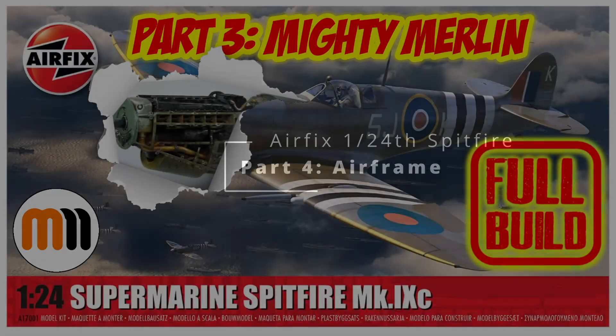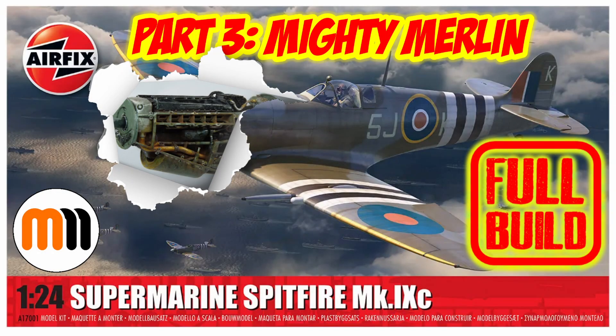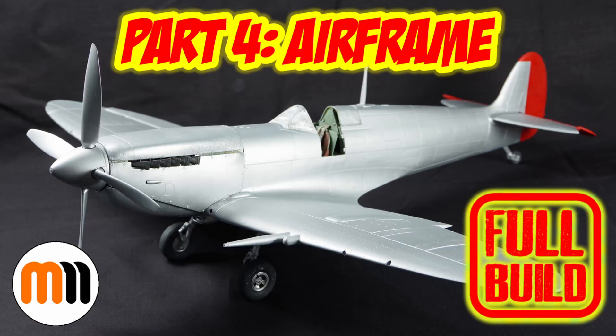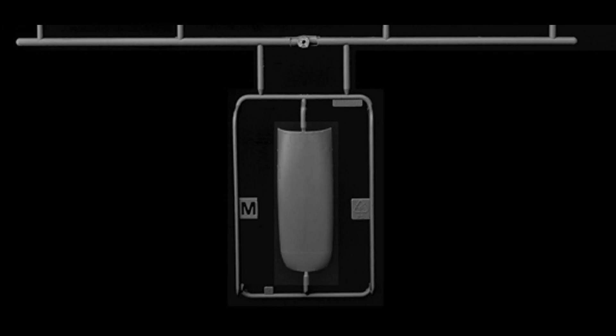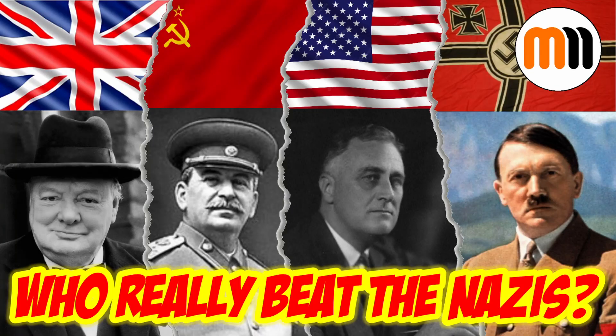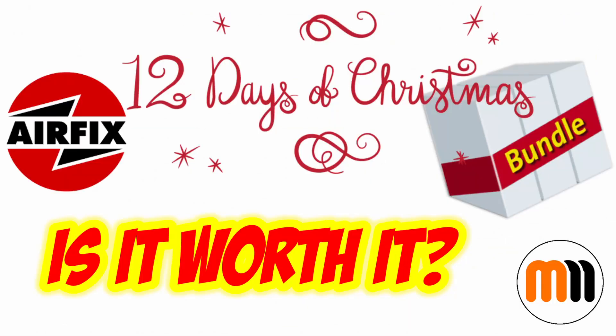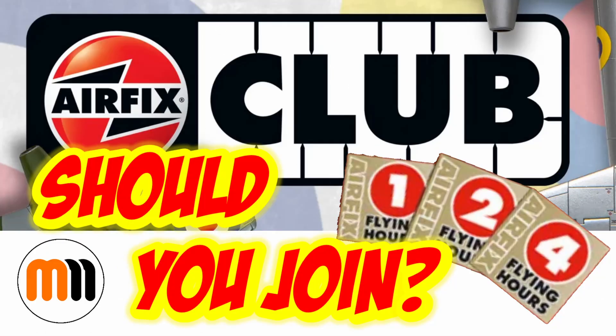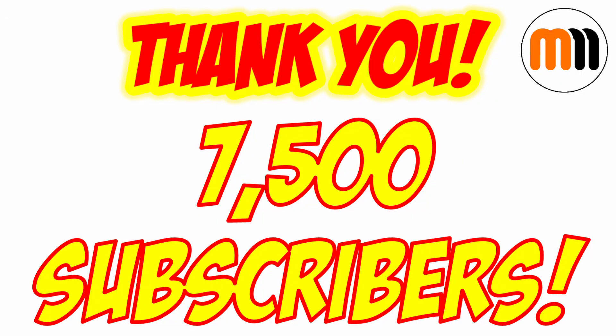Hello and welcome to Man's Model Moments. Back in December I posted part 3 of the 1:24th Airfix Spitfire build, covering the Merlin engine. But on starting this video to finish the build, I discovered I was missing Sprue M, which holds the upper nose cowling, without which I couldn't finish up. I sent an email to Airfix Customer Support, but as it was Christmas it wasn't until well into the new year that it arrived. In the interim, the channel has grown to over 7,500 subscribers, so thank you all for that, it's absolutely tremendous.